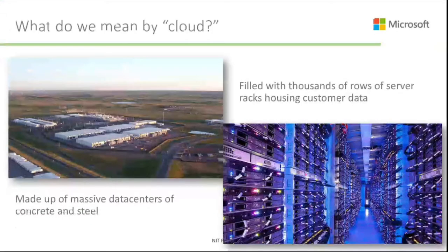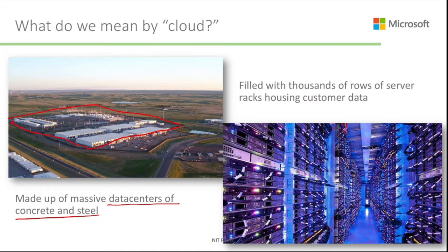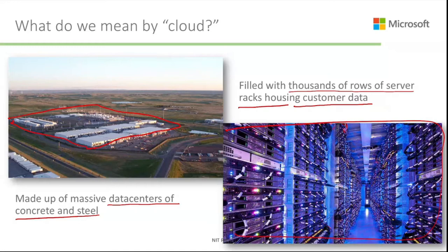What do we mean by cloud? In real life you know what cloud means, but technically it is made up of massive data centers of concrete and steel. The physical location of the cloud, if you enter into it, is a massive data center filled with thousands of rows of servers, racks, and housing customer data — data of whoever is using the service stored in all these racks of servers.